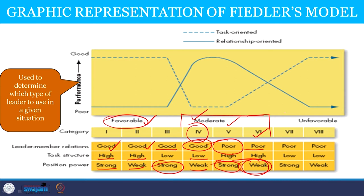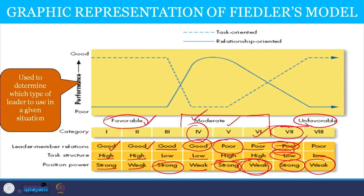When leader-member relationship is poor, task structure is high, and position power is weak, it is also categorized as moderate performance. Unfavorable situations are those where the leader-member relationship is poor, task structure is not well defined, and position power is strong — however strong the position power, if the task is not well defined and the relationship is poor, performance will not be good. The last case is when leader-member relationship is poor, task structure is low, and position power is very weak — an unfavorable situation where performance will be very poor. If there is lack of trust between leader and follower, performance is likely to decline.